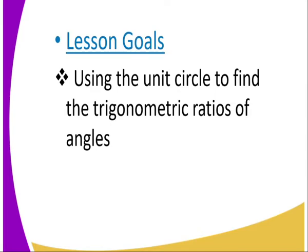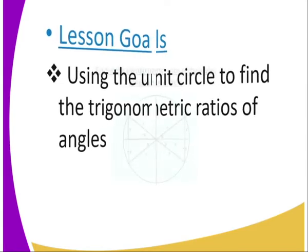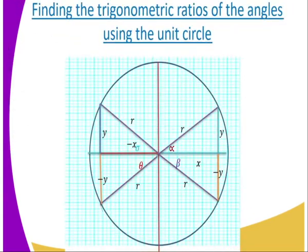the second quadrant, third quadrant, and also the fourth quadrant. We said that in the first quadrant, all the trigonometric ratios are positive — that is where we have the alpha angle. Sin, tan, and cos are all positive.